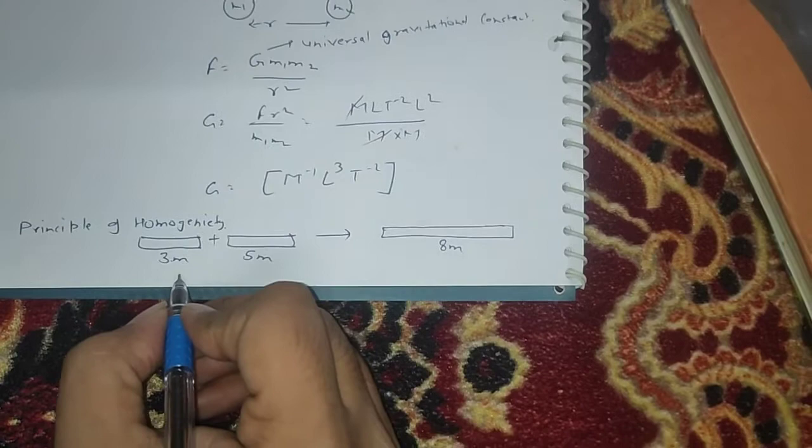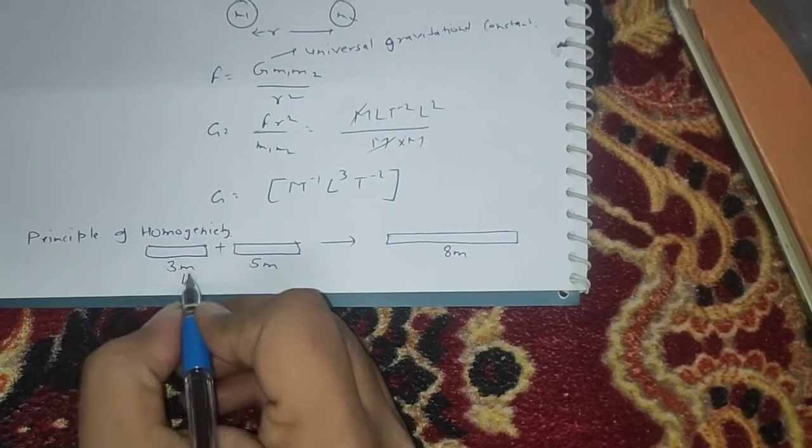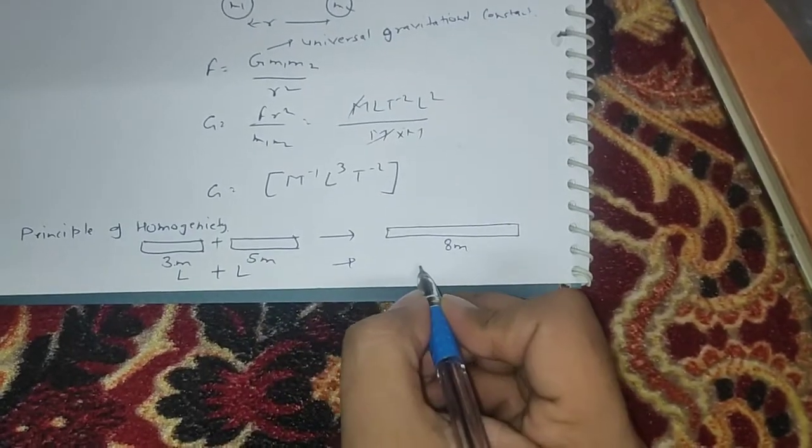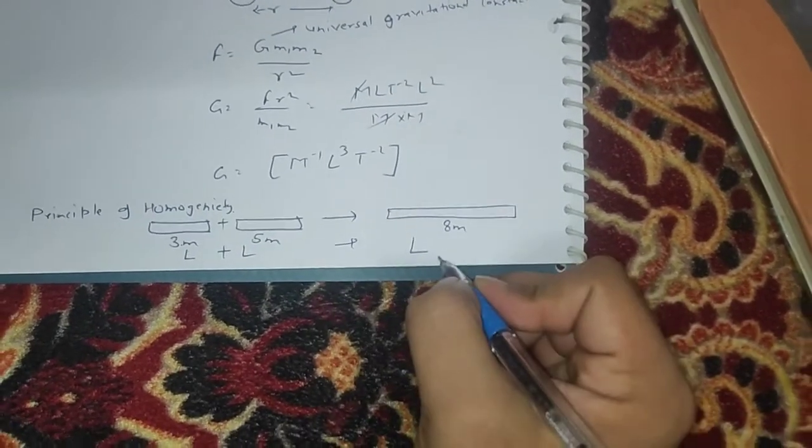Okay, so in the case of dimension we can write L because meter is in length. L plus L gives what? Gives only L not 2L.